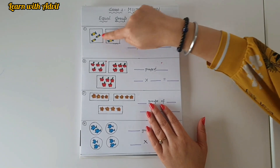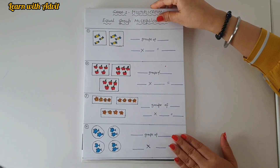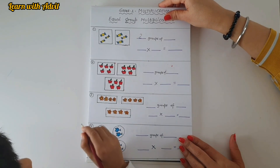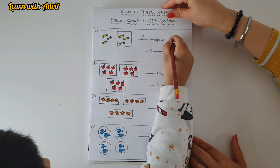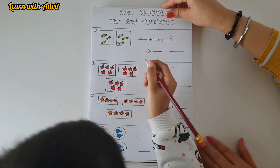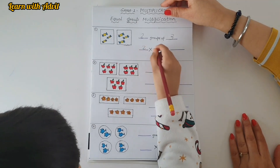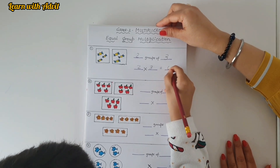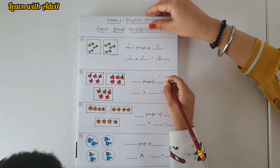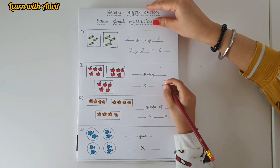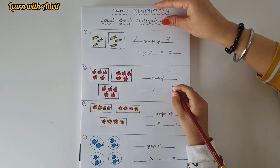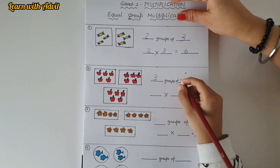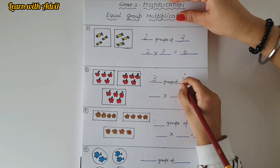Now you have to do the worksheet for equal group multiplication. How many groups are there? There are two groups with three objects in each group. Write the equation: two times three equals six. Good job! For the second one, how many groups are there? There are three groups with five apples in each group.